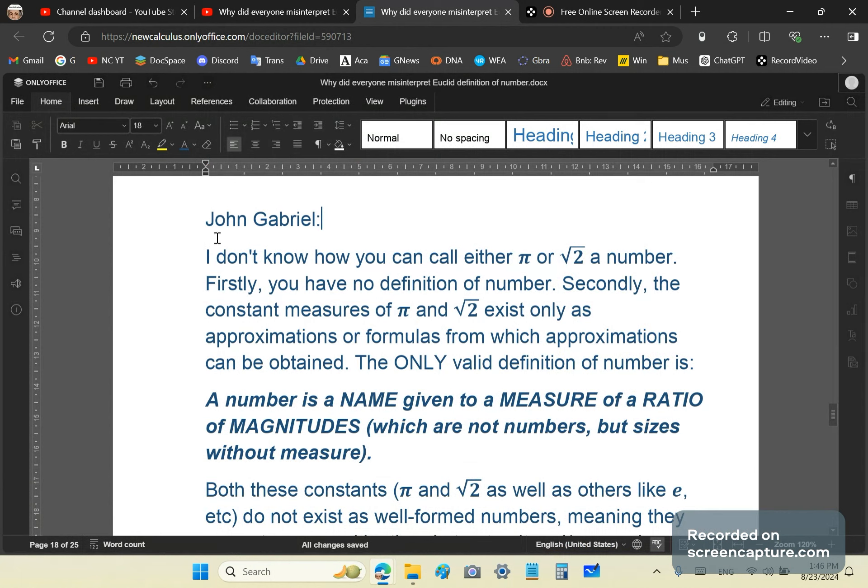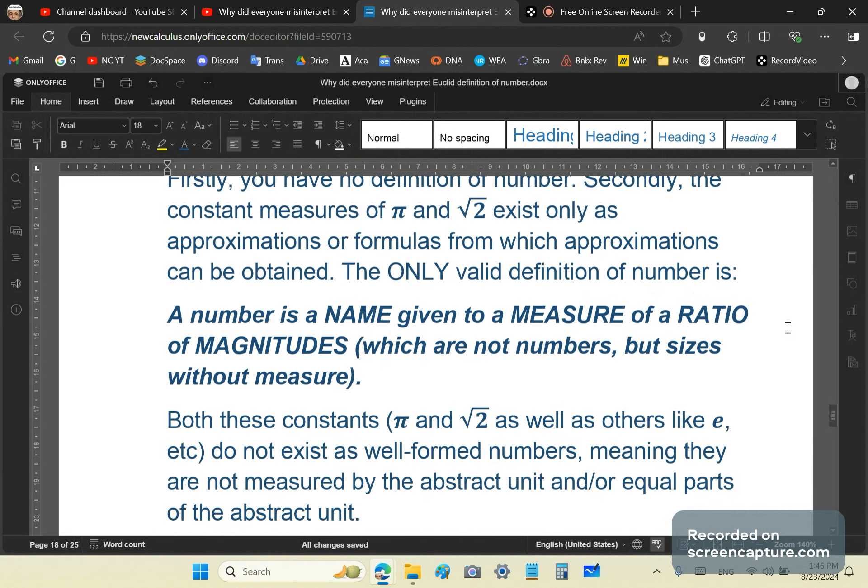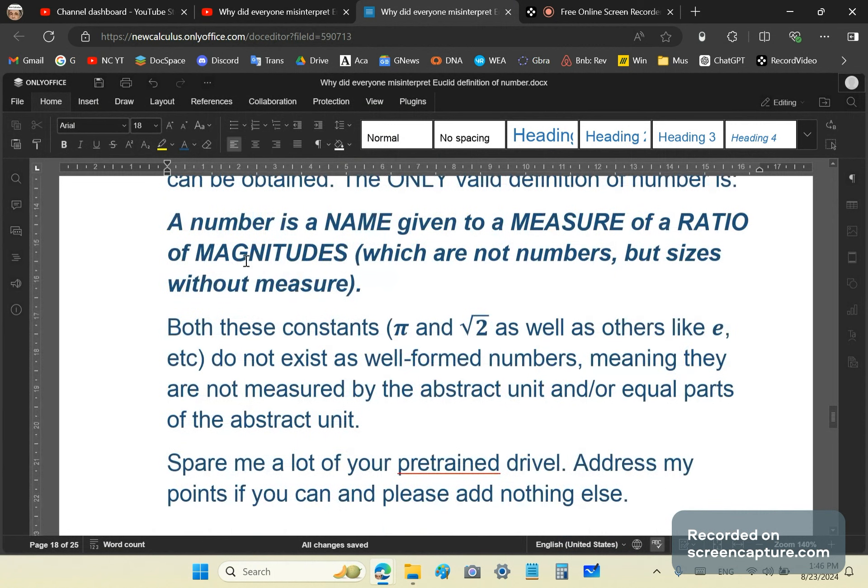So I'm just going to share the last important part and allow you to think about it. In response to ChatGPT, I say, I don't know how you can call either π or √2 a number. Firstly, you have no definition of a number. Secondly, the constant measures of π and √2 exist only as approximations or formulas from which the approximations can be obtained.